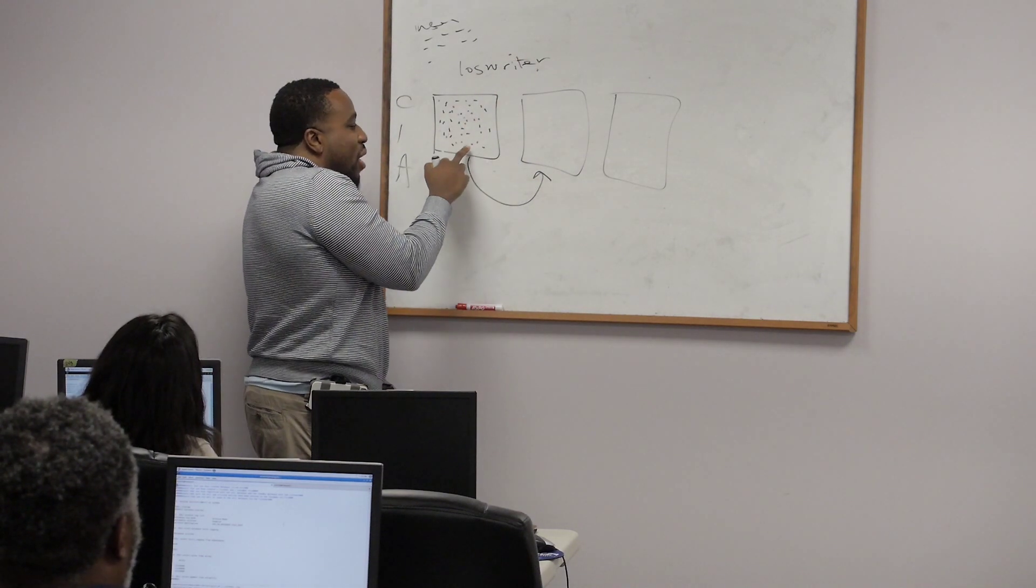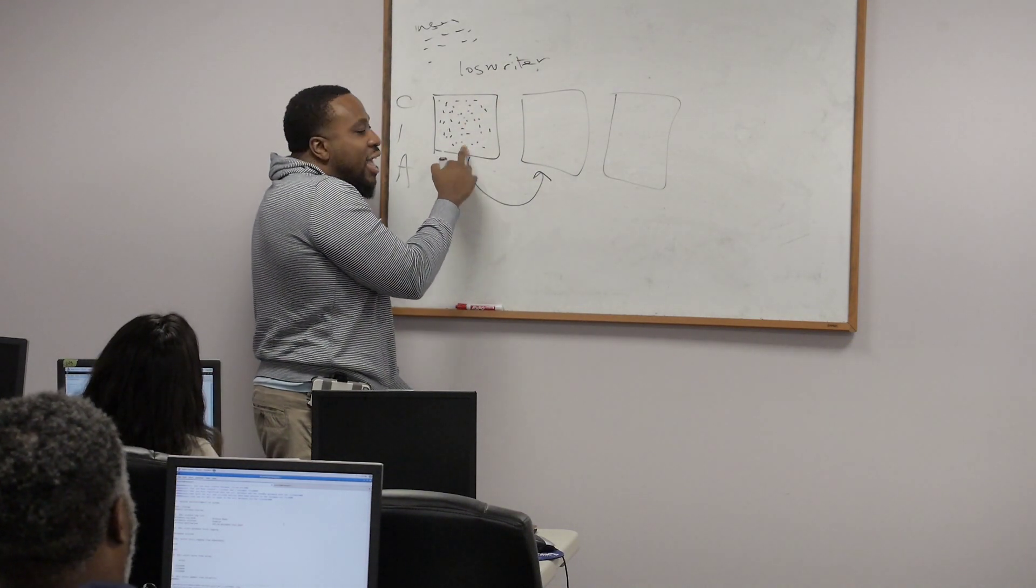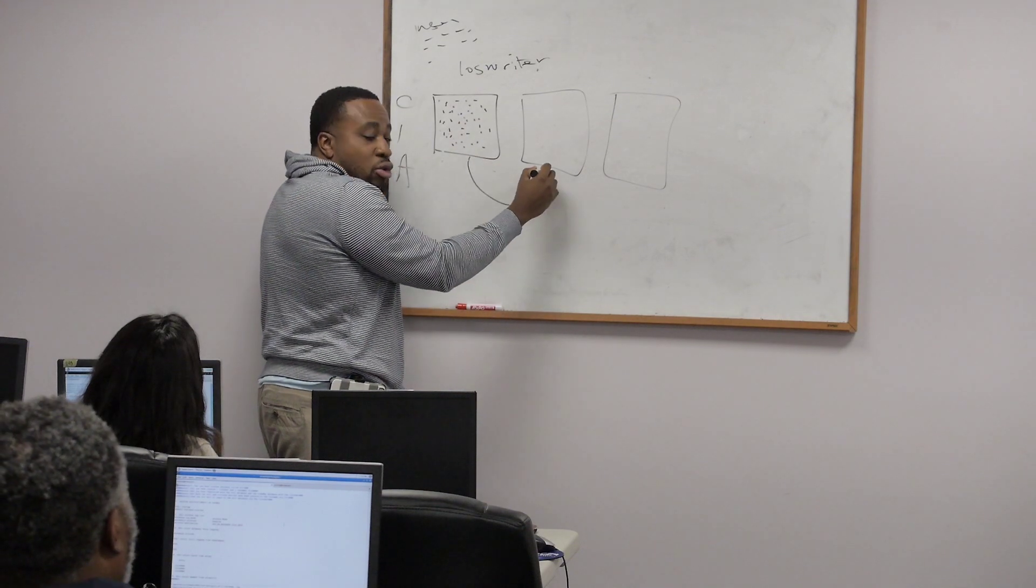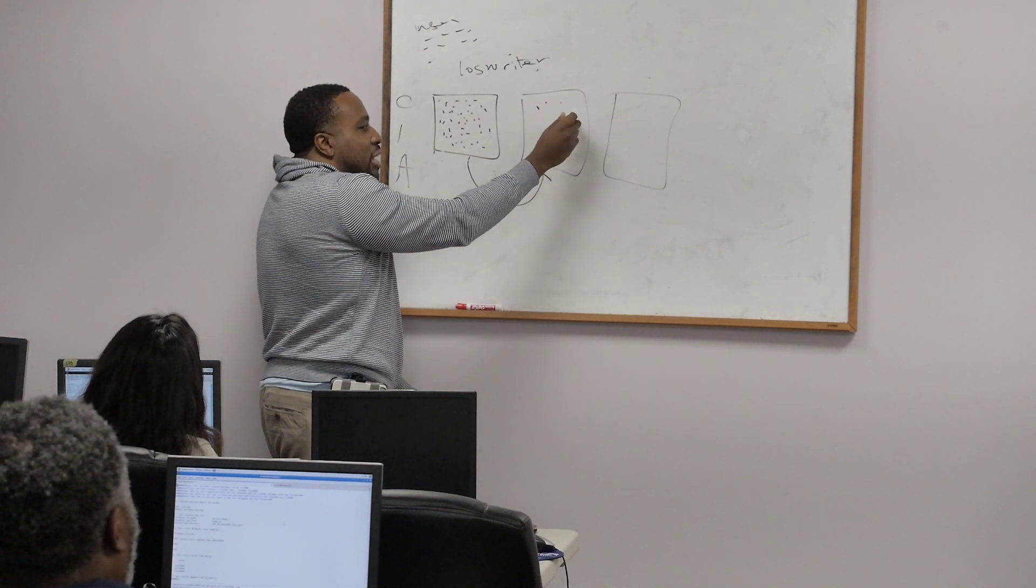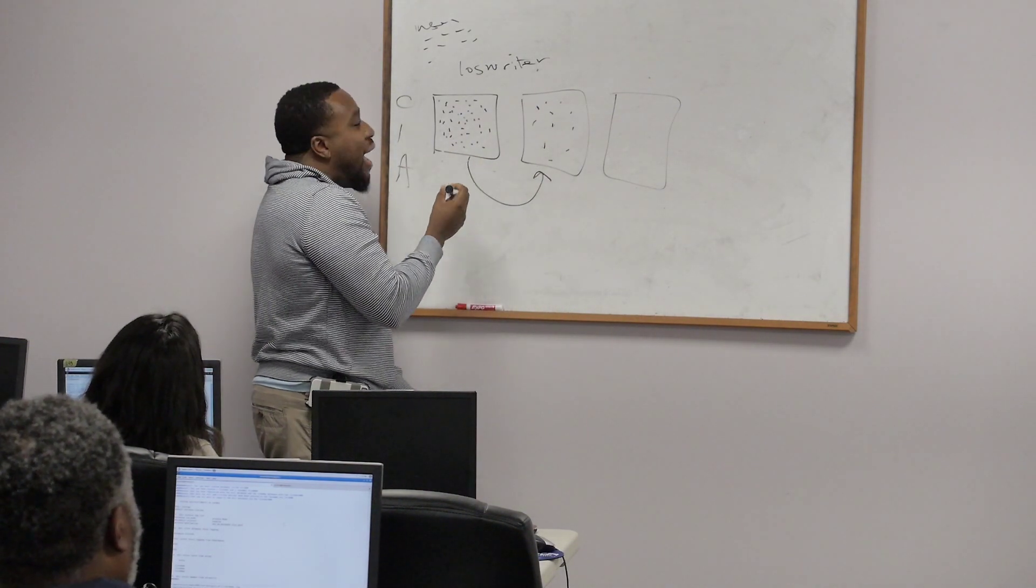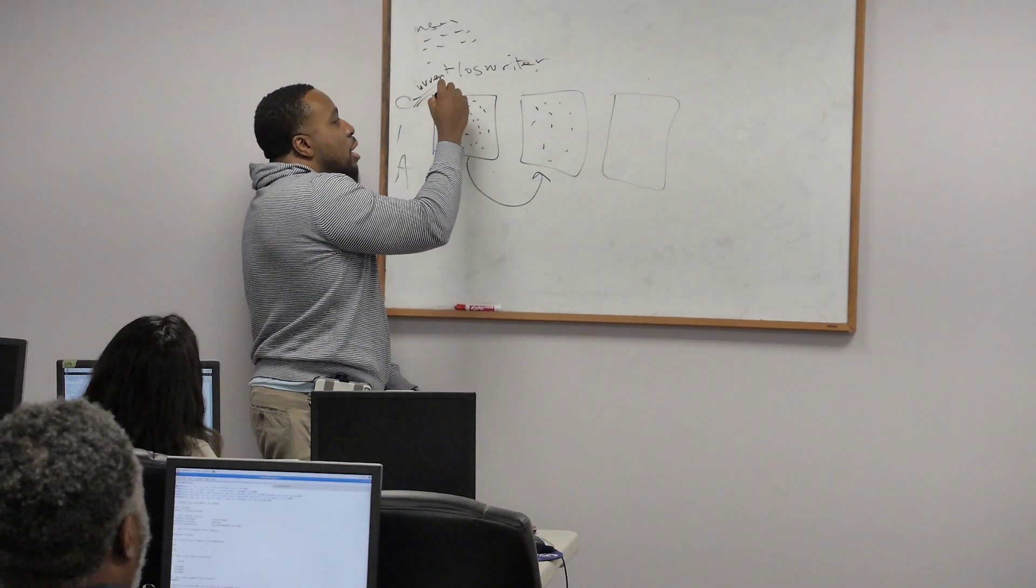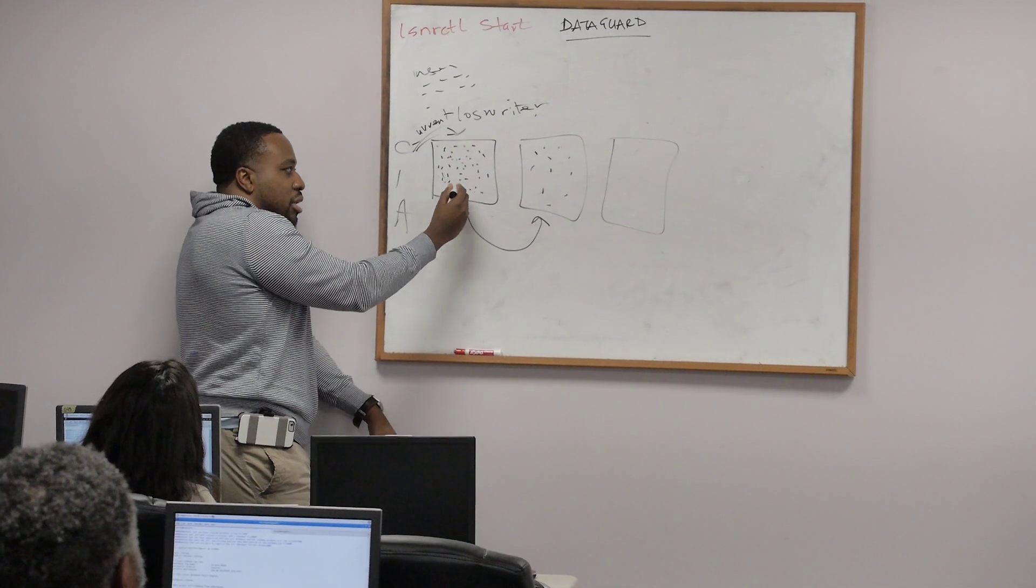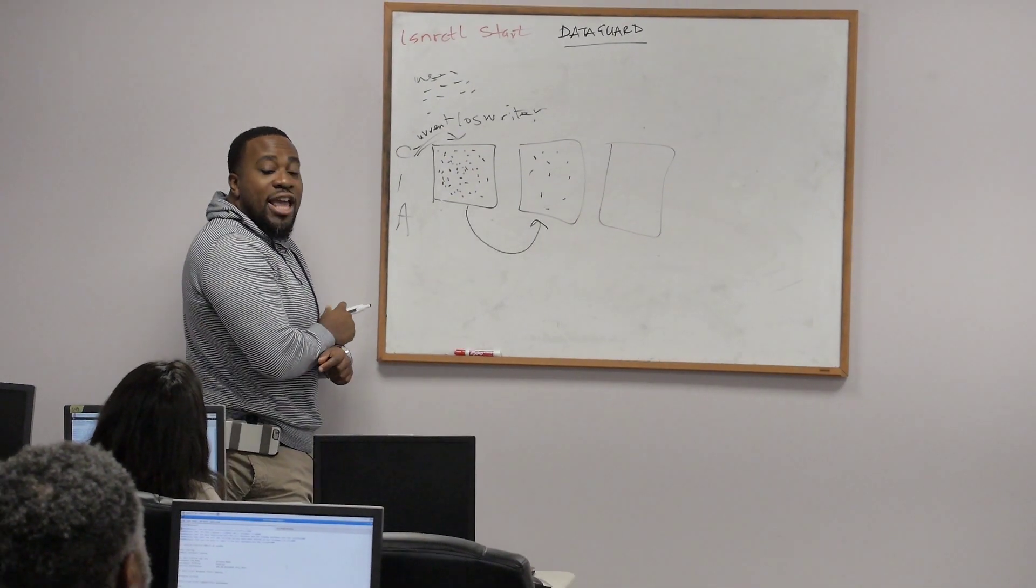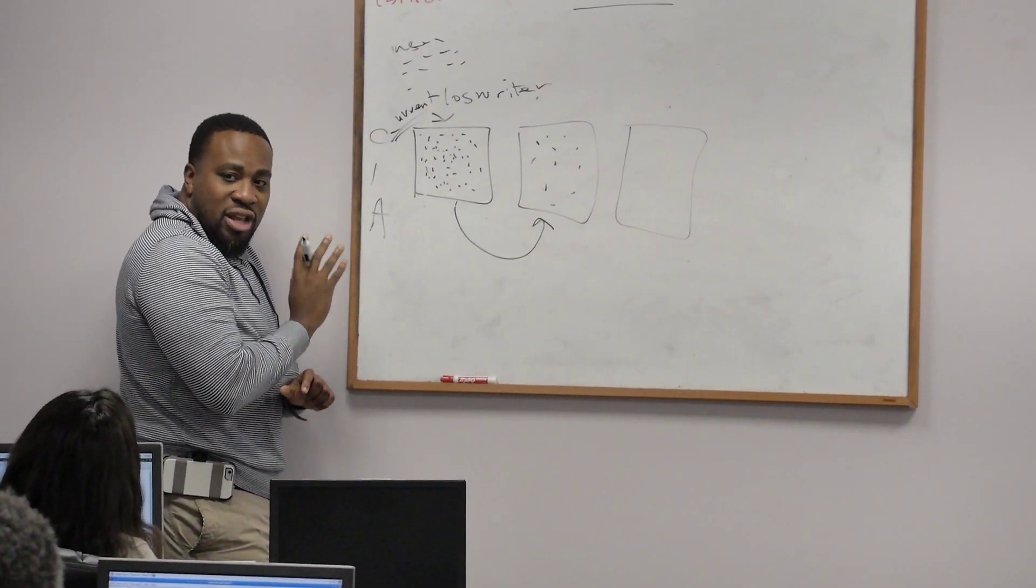Now watch this. When this redo log file is full, it has to go to what? The second redo log group. I'll start writing again. As this guy is writing, it is what we call current. When this guy is writing, initially, it's called a current state.